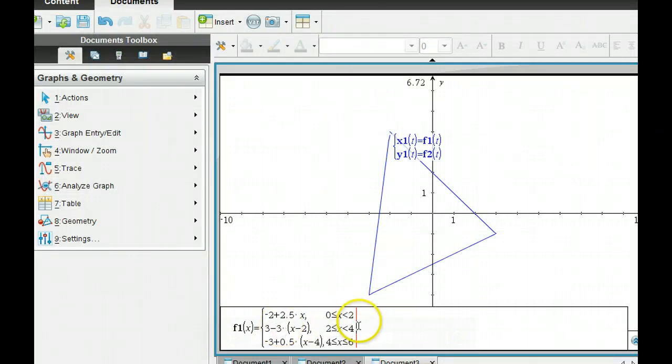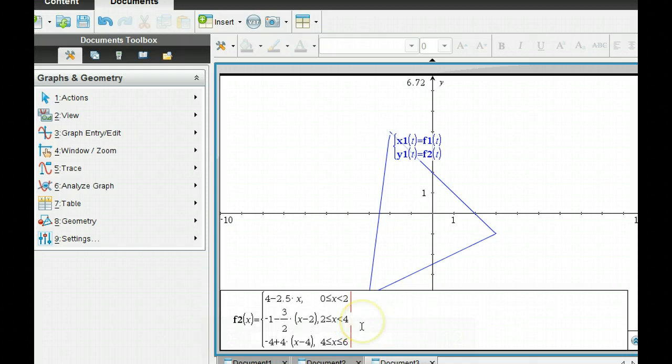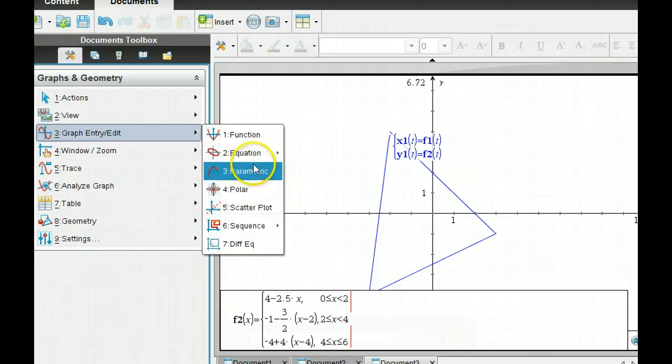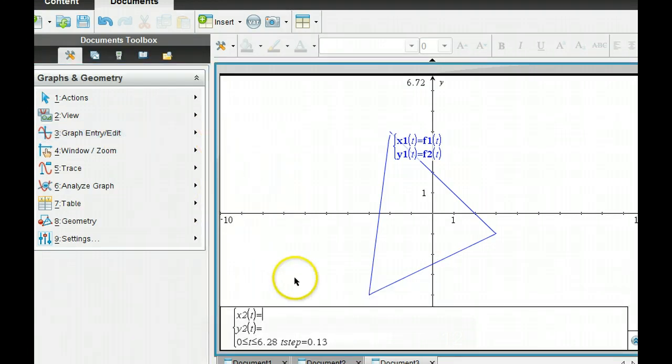So here are my equations in regular function mode. Graph entry, F1, these are all my Y equations. These are all my, I'm sorry, I said that wrong. Those were all my X equations. These are all my Y equations. Then I can go to the graph entry and find the parametric ones. And I just go up there, and there we go. There's my graph. X1 of T is equal to F1 of T and Y1, F2. Okay? So there are those equations.